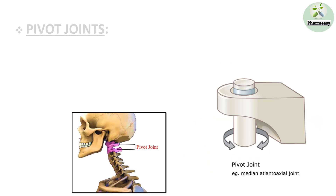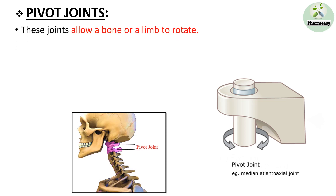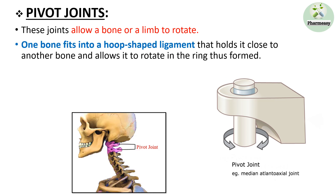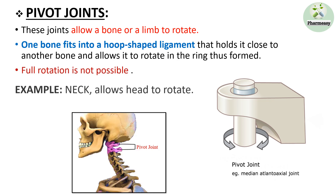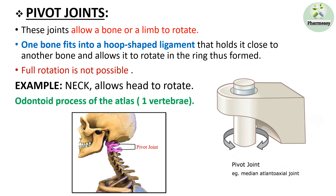The next joint is the pivot joint. These joints allow a bone or limb to rotate. In this joint, one bone fits into a hoop-shaped ligament that holds it close to another bone and allows it to rotate in the ring thus formed; however, full rotation is not possible. For example, the atlas rotates on the pivot joint of the axis, held within the ring formed by the transverse ligament and the odontoid process of the atlas.